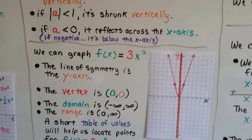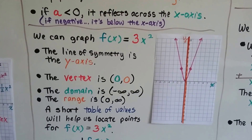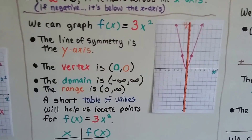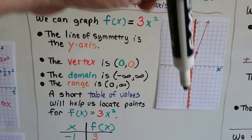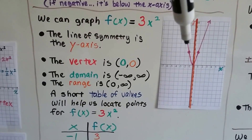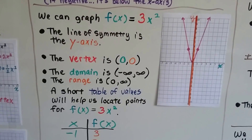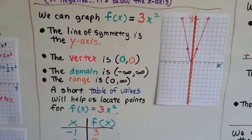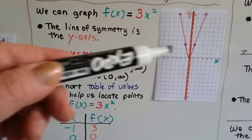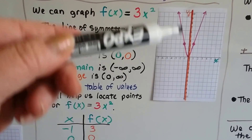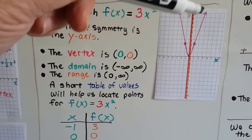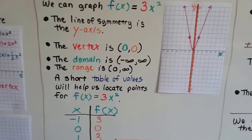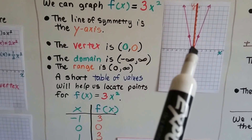We can graph f(x) equals 3x squared. The line of symmetry is the y-axis, and the vertex is at (0, 0), right at the origin. The domain is negative infinity to positive infinity, because the parabola extends in both directions forever. And the range is 0 to infinity.